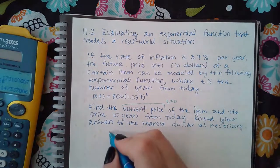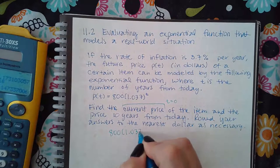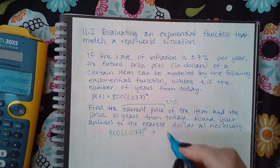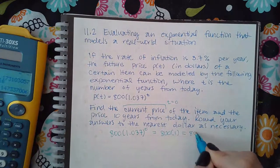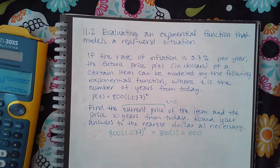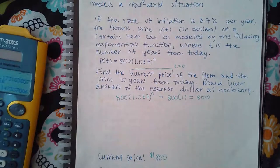For the current case, that means my t value is going to be zero. So all I'm doing is taking zero and plugging it into this function. We already know anything to the power zero is just one.